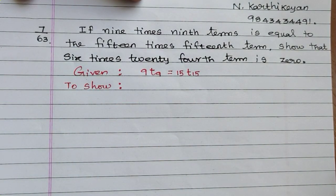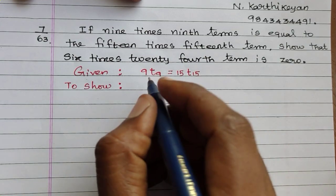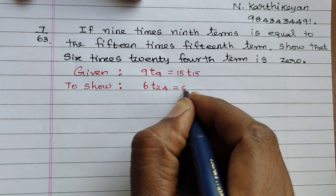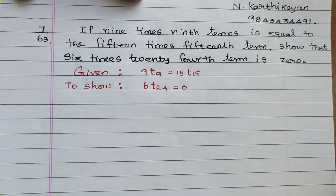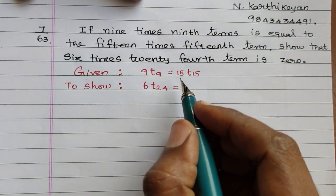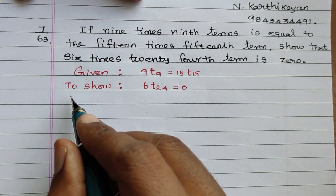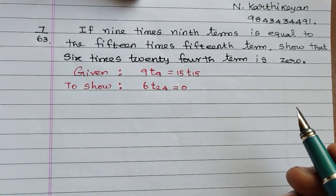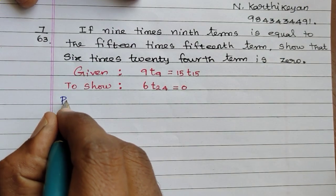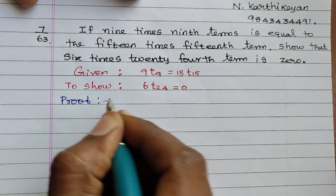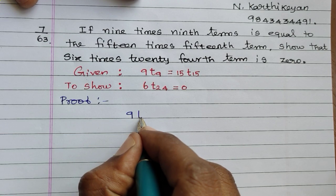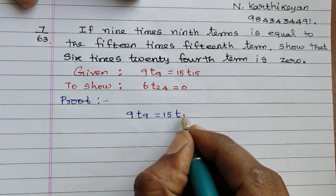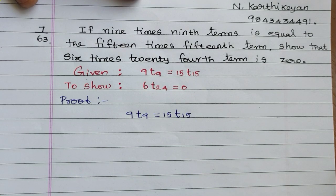We have to show that 6 times the twenty-fourth term is equal to 0. So given 9 × t9 = 15 × t15, we need to prove 6 × t24 = 0.